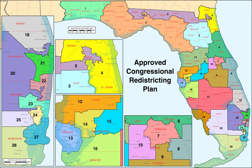Following the 1950 census, Florida gained two seats in reapportionment, expanding to eight seats from 1953 to 1963. Following the 1960 census, Florida gained four seats in reapportionment, bringing the total to twelve seats from 1963 to 1973.